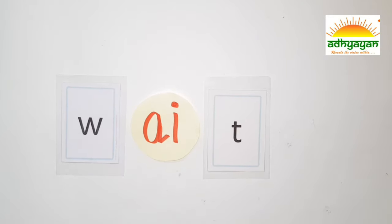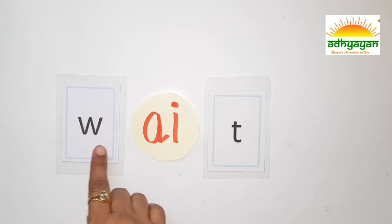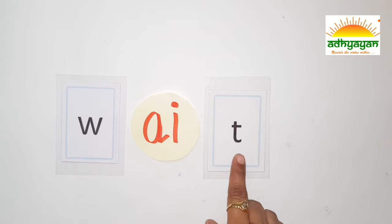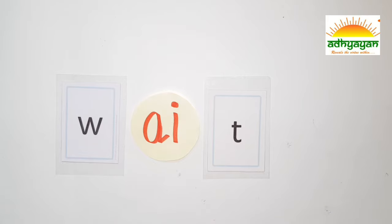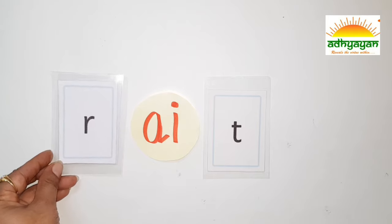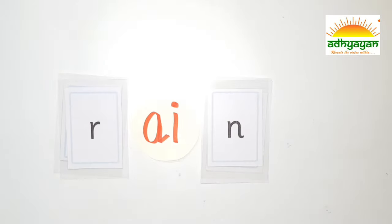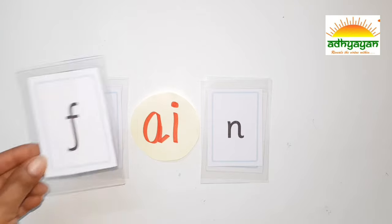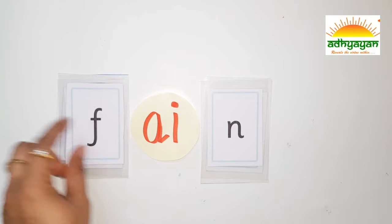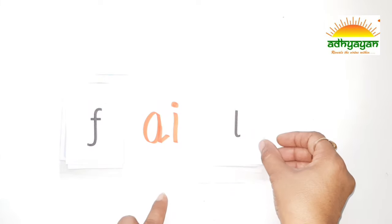Now it's the turn for the long vowels, and how the words are made from the long vowels. The first long vowel A: W-E-T — Wet. Next word with the A sound: R-A-I-N — Rain. Next word with the A sound: F-A-I-L — Fail.